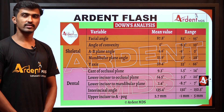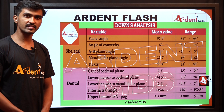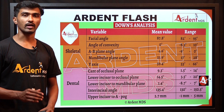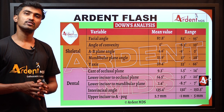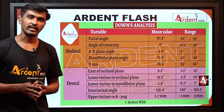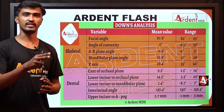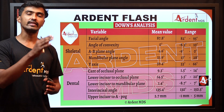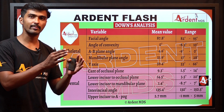Welcome to the Ordinary Flash series. In this segment we are going to see about Downs Analysis. In Downs Analysis we have two parameters: skeletal and dental. In each parameter we have five variables.